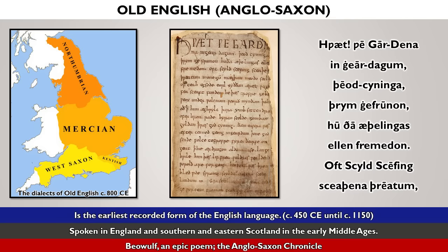Old English, or Anglo-Saxon, is the earliest recorded form of the English language, spoken in England and southern and eastern Scotland in the early Middle Ages. One of the most important surviving works of Old English literature is Beowulf, an epic poem, and the Anglo-Saxon Chronicle, a record of early English history. Here are the first few lines of Beowulf.